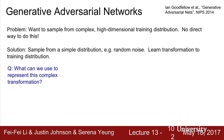In the GAN setup, we want to sample from a complex high-dimensional training distribution. There's no direct way to do this, but we can sample from simpler distributions like Gaussian random noise. We learn a transformation from these simple distributions directly to the training distribution using a neural network. We take an input vector of random noise, pass it through a generator network, and get as output a sample from the training distribution.